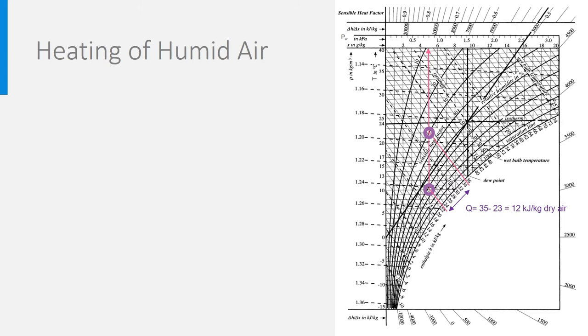If we use the equation from the previous slide, we have for 0.2, H2 is 22 plus 0.005 times 1.86 times 22 plus 2500, which amounts to 34.7 kJ. For H1, we get 22.6 kJ, so the heat needed is 12.1 kJ per kilogram. Of course, reading it on the diagram is a bit less precise, but it is good enough.